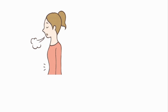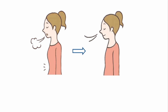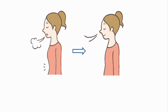In periodic breathing, the person breathes deeply for a short interval and then breathes slightly or not at all. This cycle repeats over and over again. Various subtypes of periodic breathing are Biot's breathing and Cheyne-Stokes breathing.